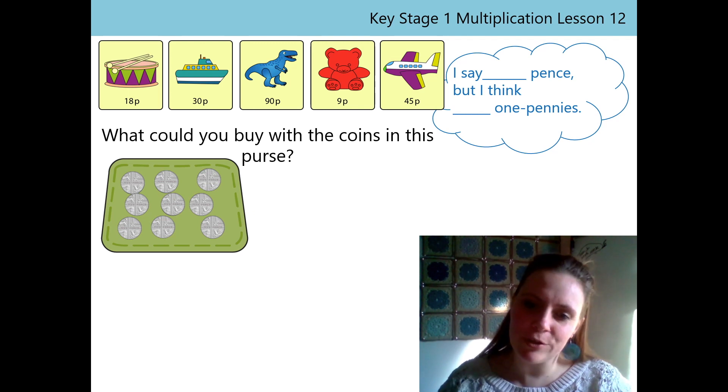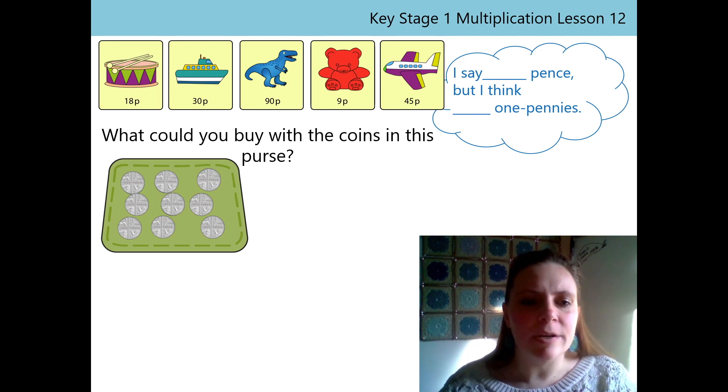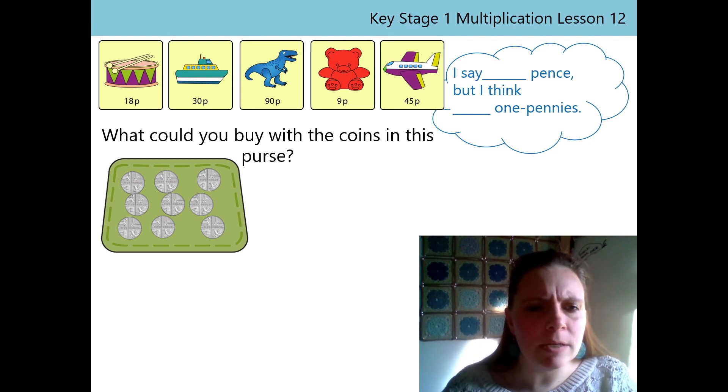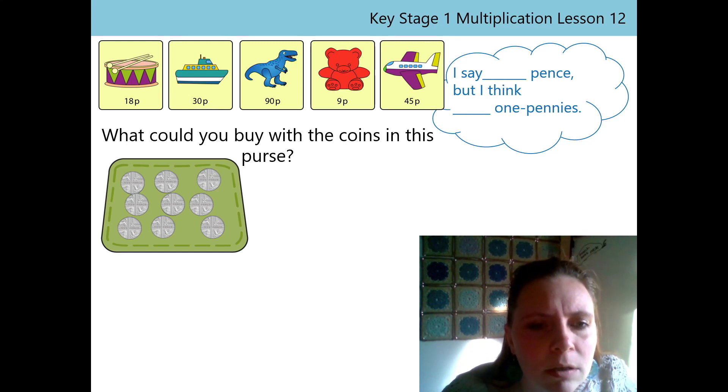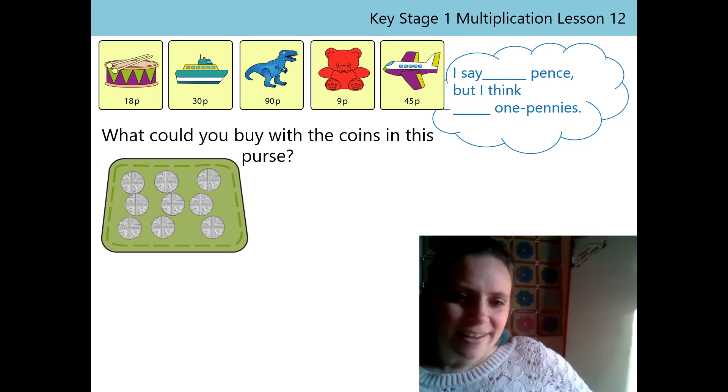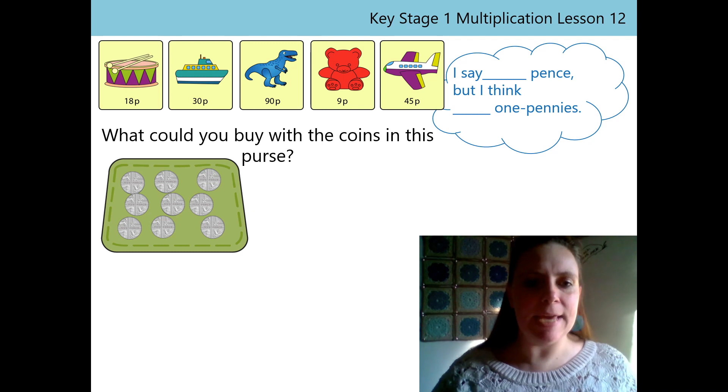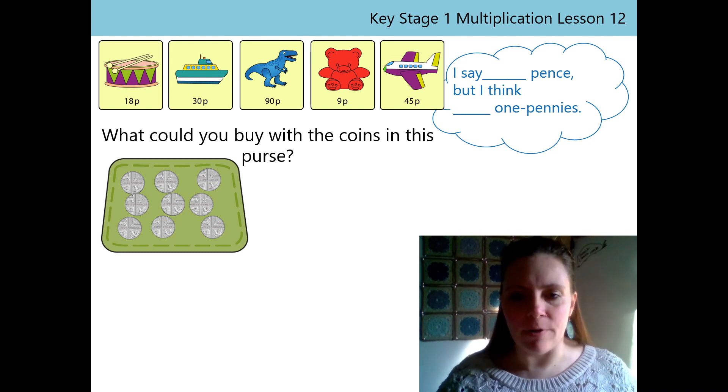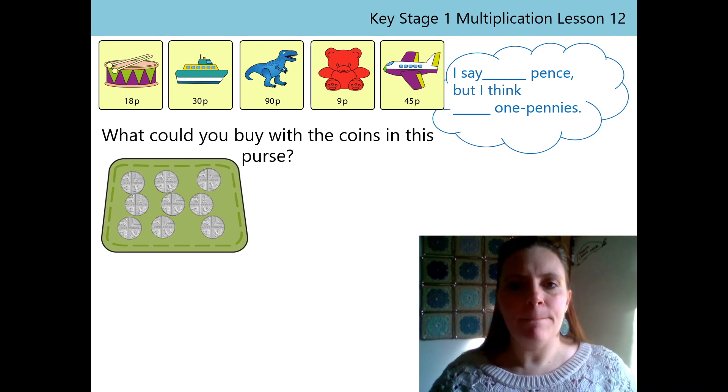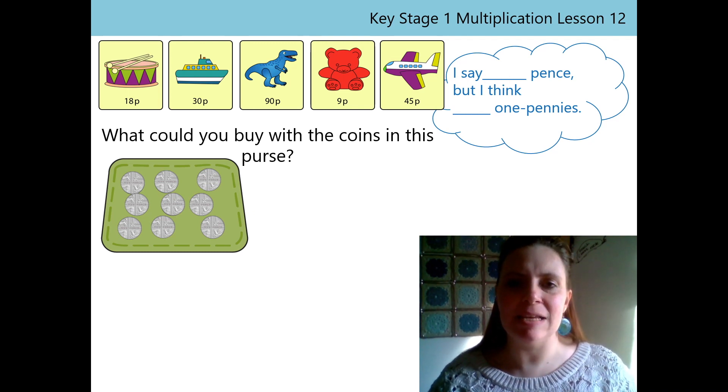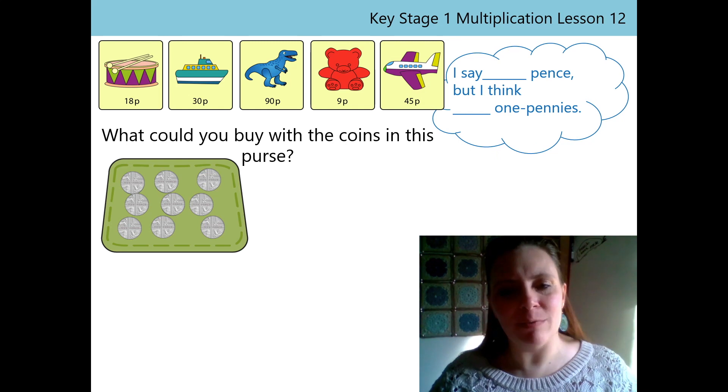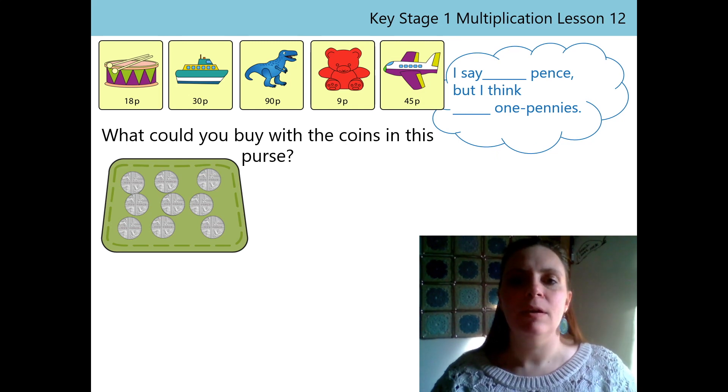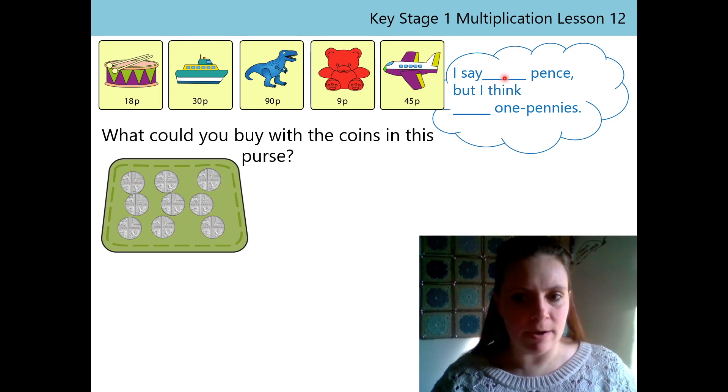Brilliant. Another purse. We can go shopping again. So what are the coins in this purse? Have a little look. Oh yes. There are 5p coins again. We're great at counting in 5s. Let me just pop our 5p into this sentence up here though, because it really helps me remember their value. So I say 5p, but I think 5 one pennies. Brilliant.